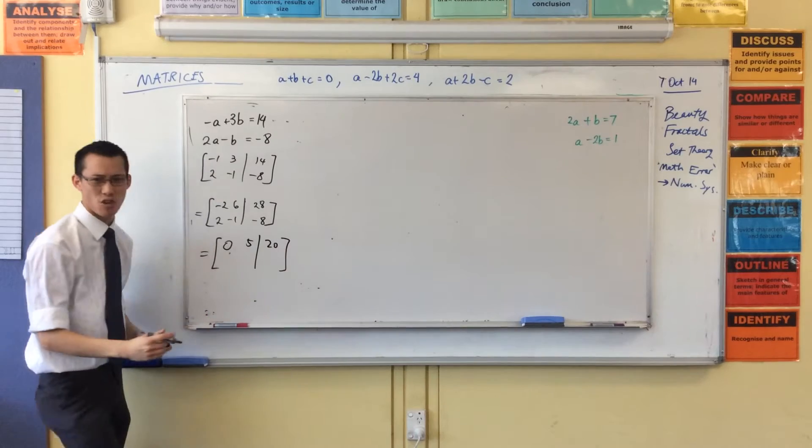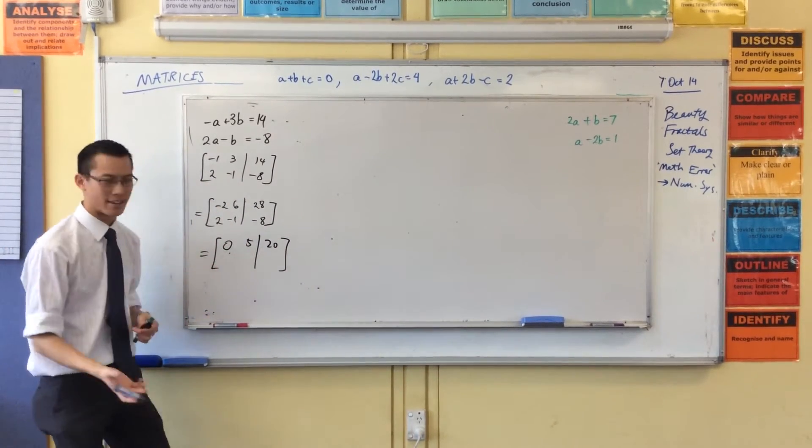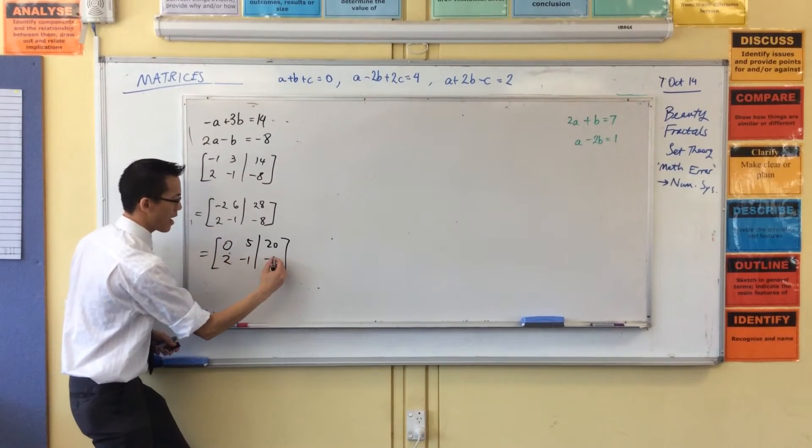In general, you try to add where you can because most people's brains are better with adding than subtracting. We get negatives mixed up and so on. And this row is the same as before.